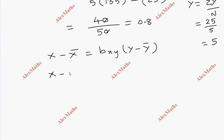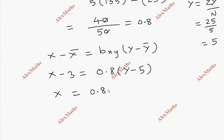So x minus 3 equals 0.8 into y minus 5. Therefore x equals 0.8y minus 1.